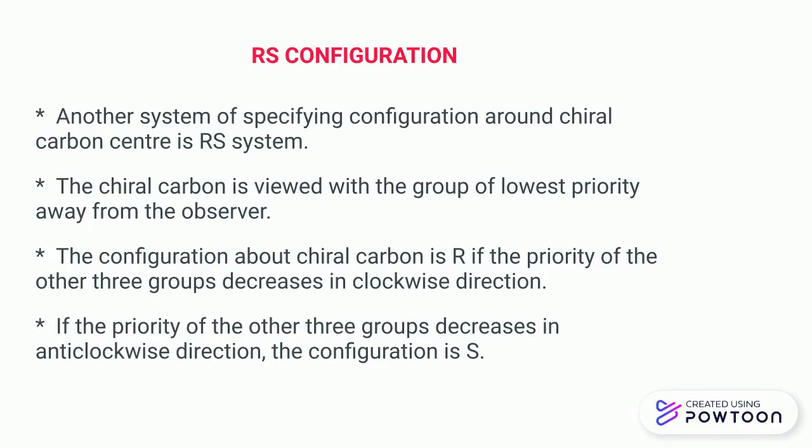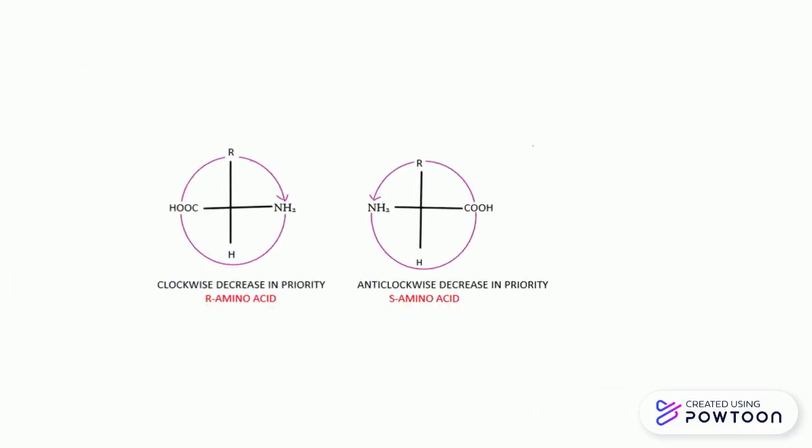We put the atom of lowest priority below the plane or away from the observer. The configuration about the chiral carbon is R if the priority of the other three groups decreases in a clockwise direction, and if it decreases in an anti-clockwise direction, then the configuration is S. This is the representation of RS configuration of amino acids.